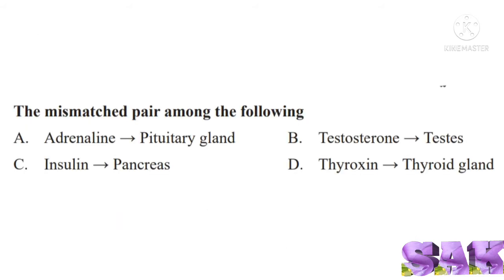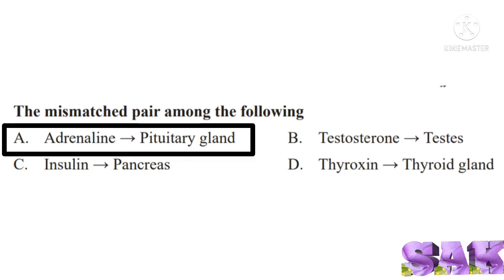Next question is the mismatched pair among the following: A. adrenaline-pituitary gland, B. testosterone-testis, C. insulin-pancreas, D. thyroxin-thyroid gland. Here hormone and the glands producing them are given. Mismatched pair among these is option A, adrenaline-pituitary gland. Adrenaline is produced in adrenal gland.